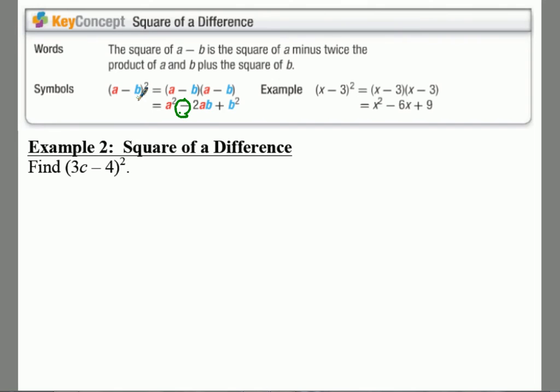And then for your third term, you just square that. So we're going to take 3c and square it. So 3 times 3 is 9c squared.